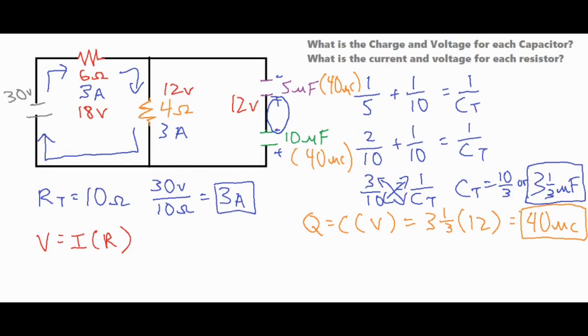Now the next thing we need to find is the delta V across each of those. So all we have to do is take the capacitance for each individual one, along with our Q value, and then we can go ahead and solve for those delta Vs.